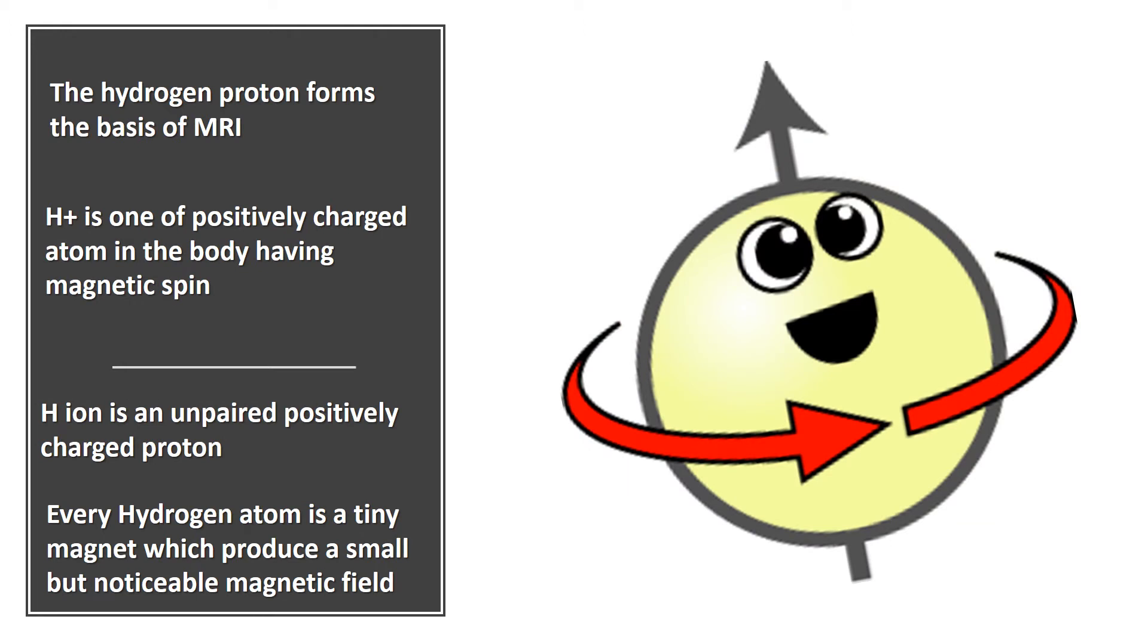The hydrogen proton forms the basis of MRI. Hydrogen ion is one of the positively charged atoms in the body having magnetic spin. Hydrogen ion is an unpaired positively charged proton. Every hydrogen atom is a tiny magnet which produces a small but noticeable magnetic field.